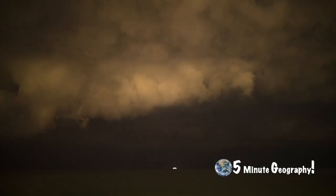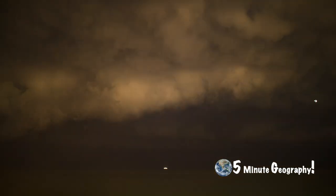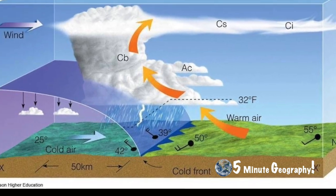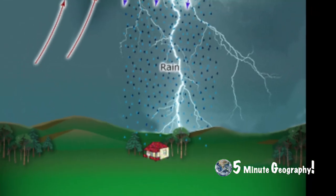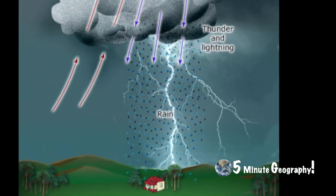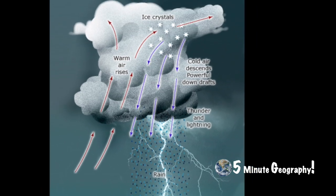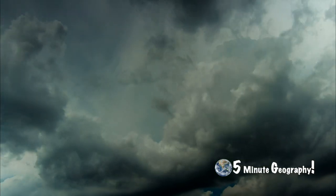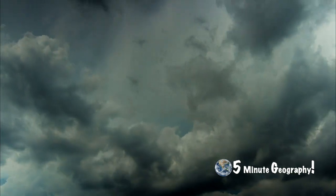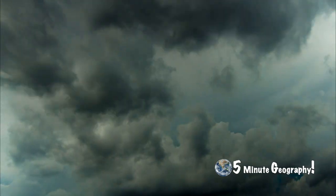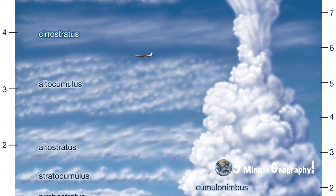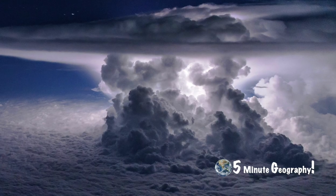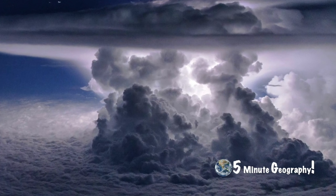Thunderstorms develop when the atmosphere is unstable. This is when warm air exists underneath much colder air. As the warm air rises, it cools and condenses, forming small droplets of water. If there is enough instability in the air, the updraft of warm air is rapid, and the water vapor will quickly form a cumulonimbus cloud. These cumulonimbus clouds can form rapidly.